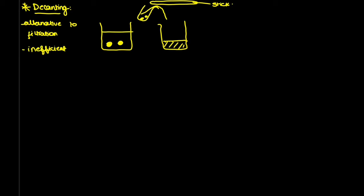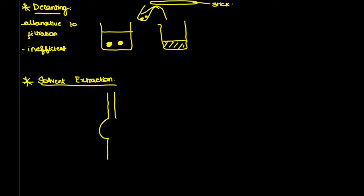The next method is solvent extraction, which is very much part of your syllabus. This method is based on the difference in densities of liquids. A special apparatus called a separating funnel is used. We use two immiscible liquids — meaning they cannot dissolve in each other — and they have different densities.